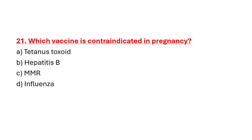Question 21: Which vaccine is contraindicated in pregnancy? Option A: Tetanus Toxoid. Option B: Hepatitis B. Option C: MMR. Option D: Influenza. Correct answer is Option C: MMR.